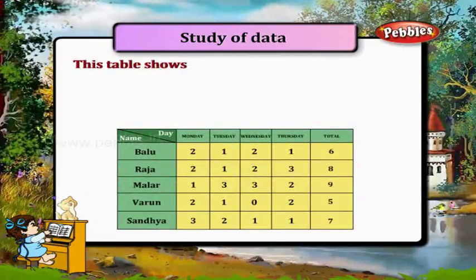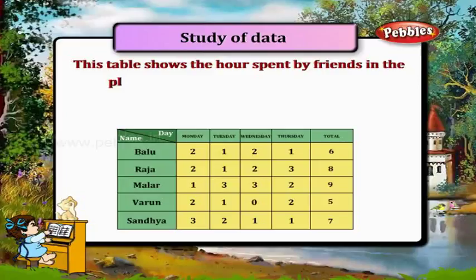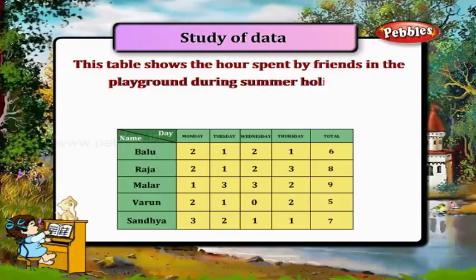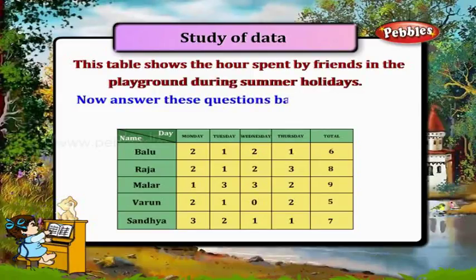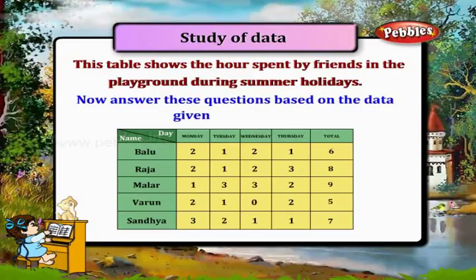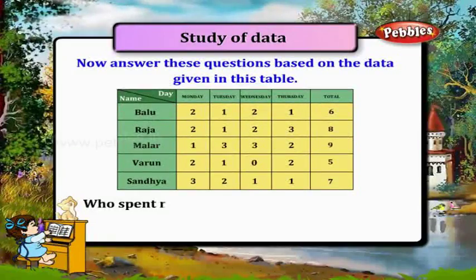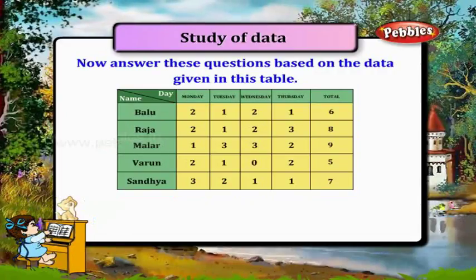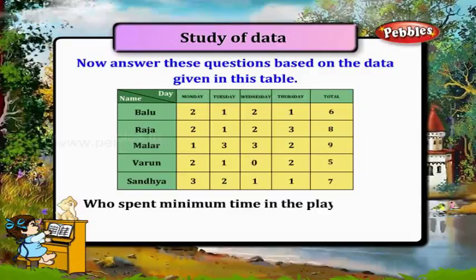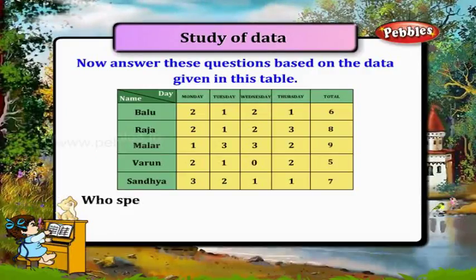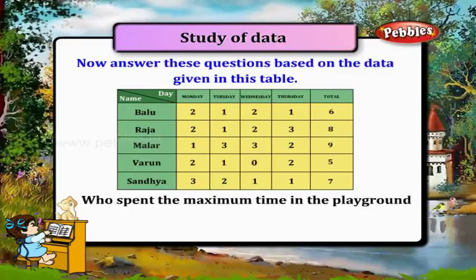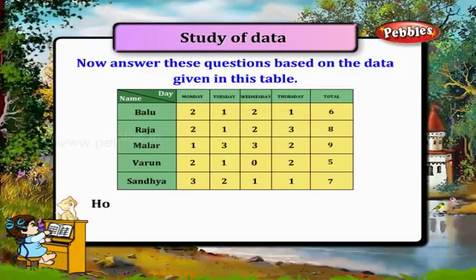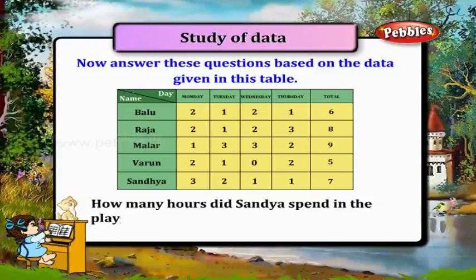This table shows the hours spent by friends in the playground during summer holidays. Who spent the maximum time in the playground? Malar. Who spent the minimum time? Barun. Who spent the maximum time on Thursday? Raja. How many hours did Sandhya spend on Monday? Three.